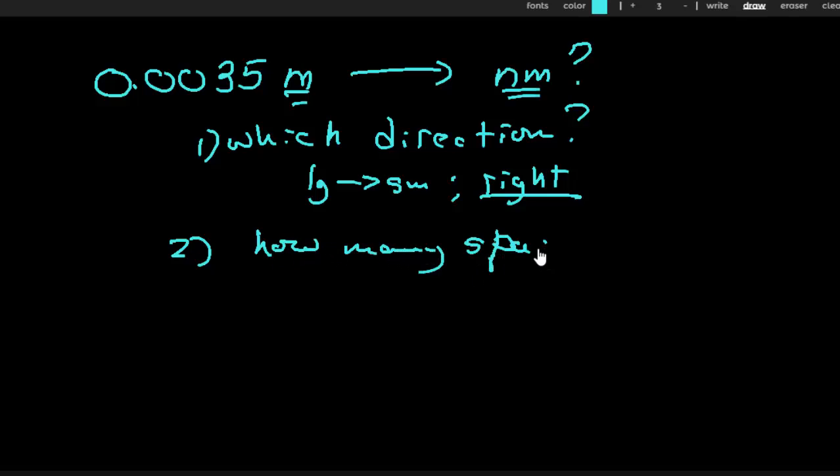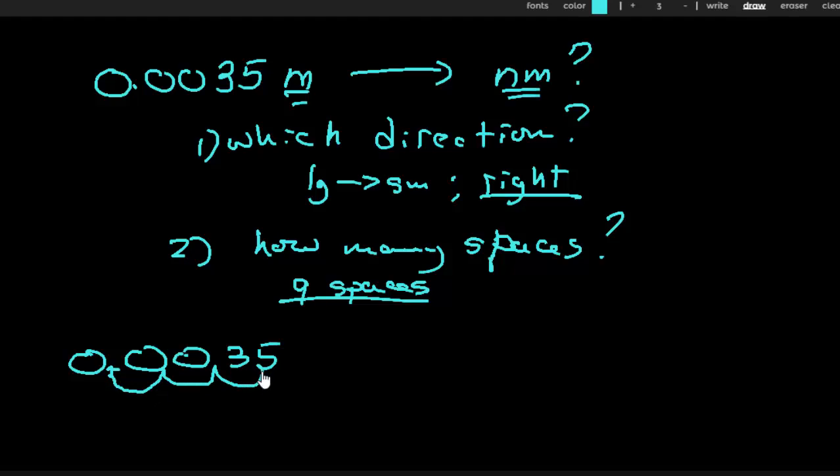All right, so now I get my number line. And until you learn the relationships between these in your head, use the number line. That's what it's for. So meter to nano is nine spaces. Nine spaces all the way out to nano. So I'm going to take my decimal point from where it is. Now it's right here between these two. This is where I'm starting with 0.0035. And I'm going to move it nine spaces to the right. I'm going to need some zeros here.